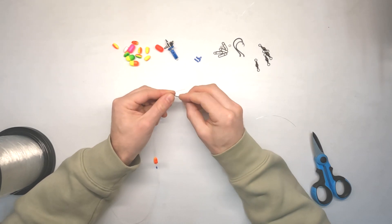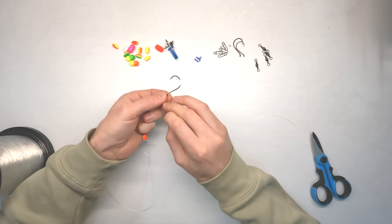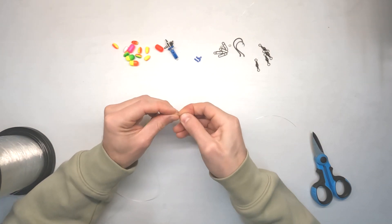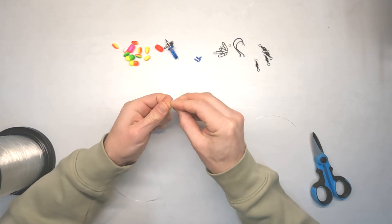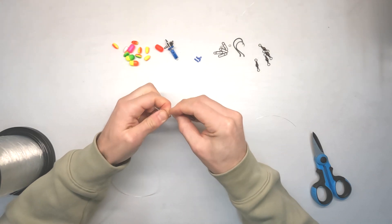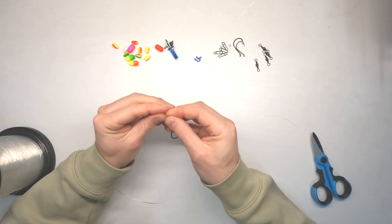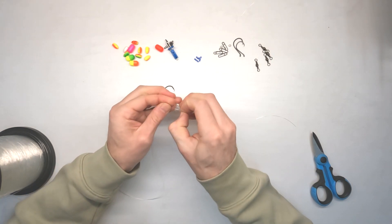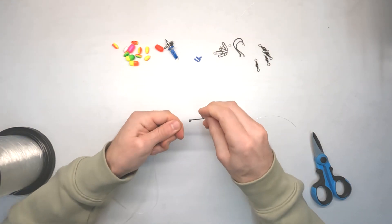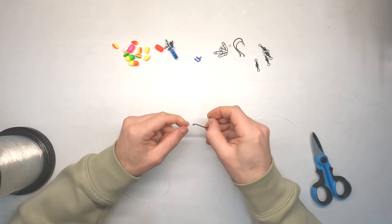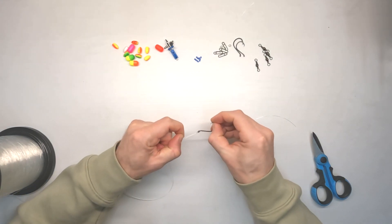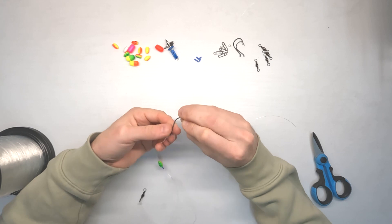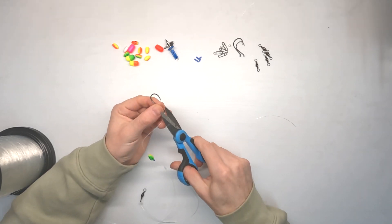It means that once you've put your float bead on and tied your hook on, which I do with the uni knot, so through the eye of the hook, grab both strands together, go through there three times, and then you can just draw that up like so.